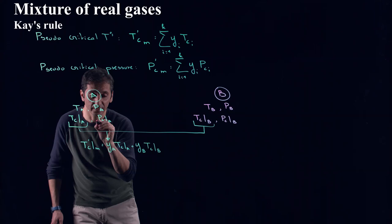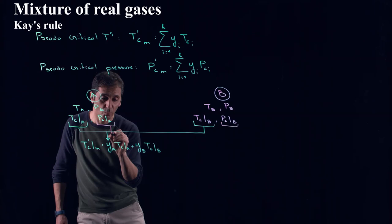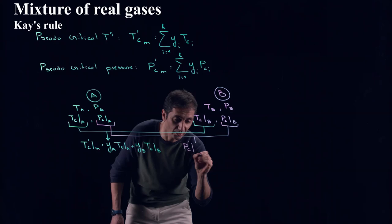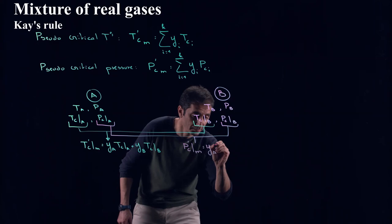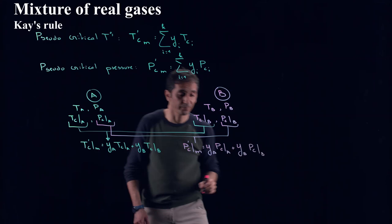And then we will take the critical pressure of A, critical pressure of B, we combine them to get now the pseudocritical pressure. So P prime critical of our mixture is equal to YA times P critical of A plus YB times P critical of B. So now we have the new pseudocritical temperature and pressure.